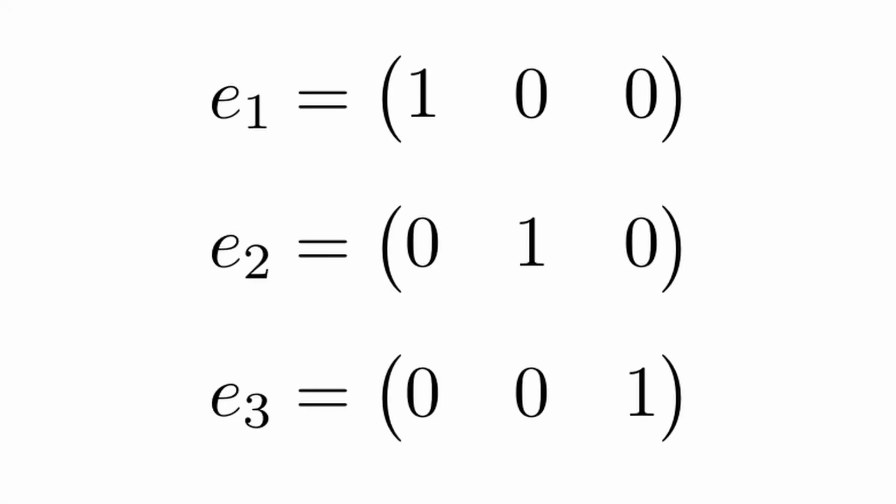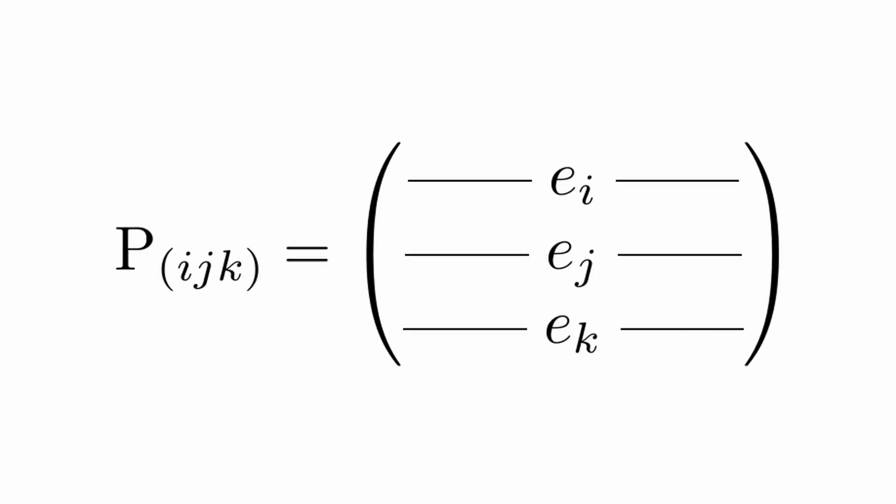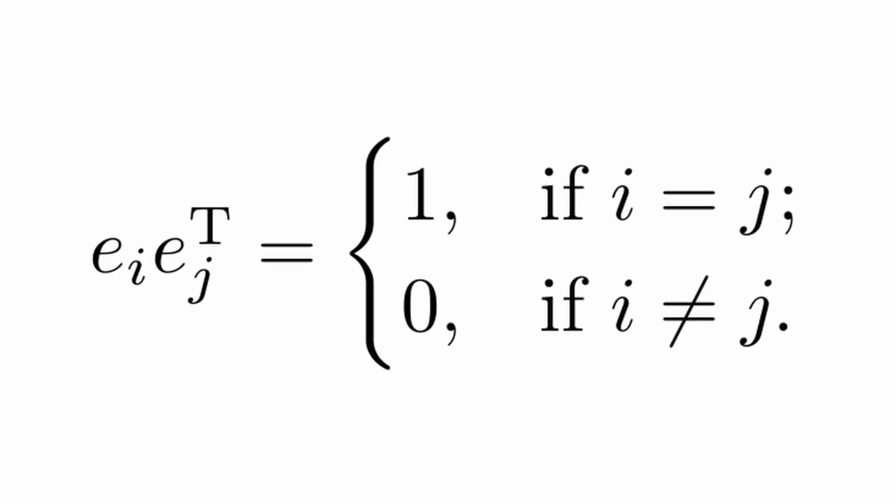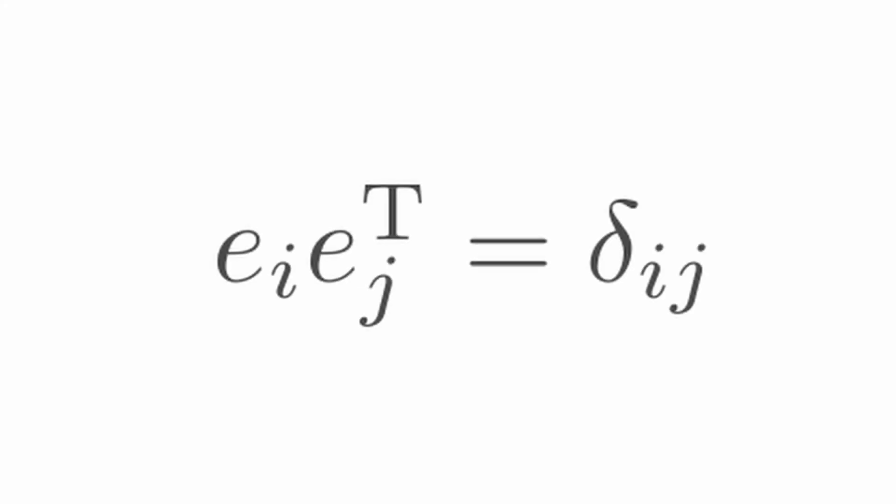Let's write the P matrices in a slightly different way. Let the row vector E sub i be the i-th row of the identity matrix. Here are the three row vectors E sub 1, E sub 2, and E sub 3. P sub i,j,k equals the matrix with E sub i in the first row, E sub j in the second row, and E sub k in the third row. The E row vectors are orthonormal, so E sub i times E sub j transpose is equal to 1 if i equals j, and 0 if i is not equal to j, which is exactly our definition of the Kronecker delta: E sub i times E sub j transpose equals delta sub ij.